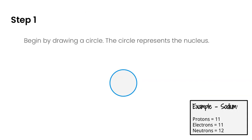Let's walk through the steps of building up a diagram — you're always going to follow these same steps. First, we begin by drawing a circle, like the blue circle on the screen, and that circle is going to represent the nucleus.